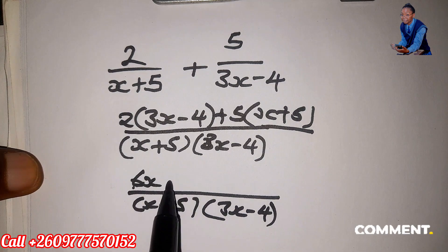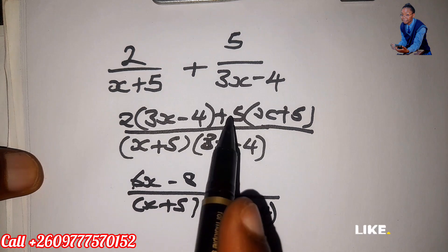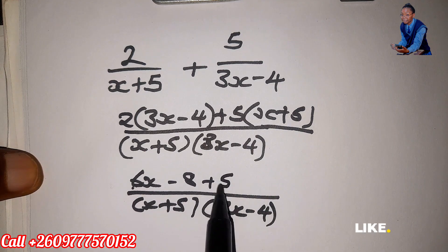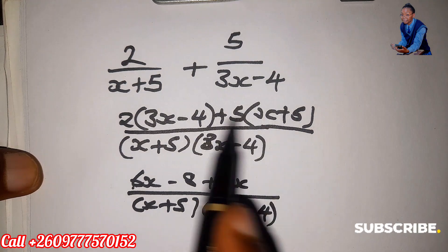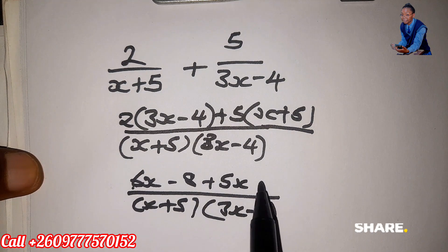2 times 4 is negative 8, 5 times x is 5x, positive times positive is positive, 5 times 5 is 25.